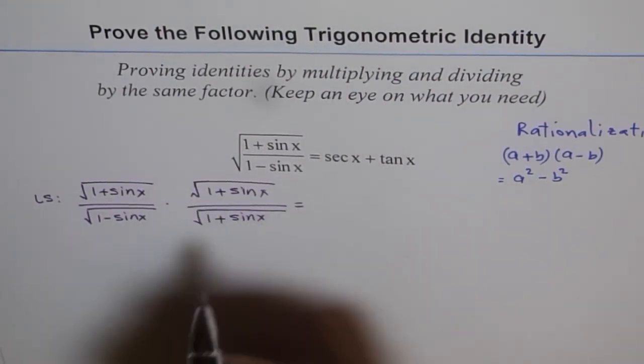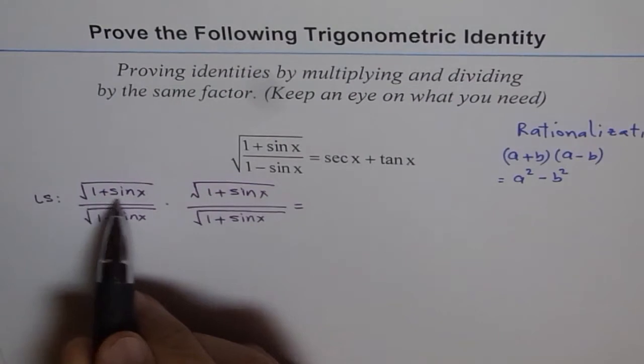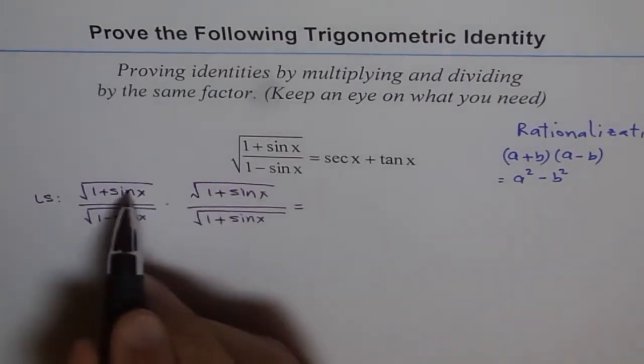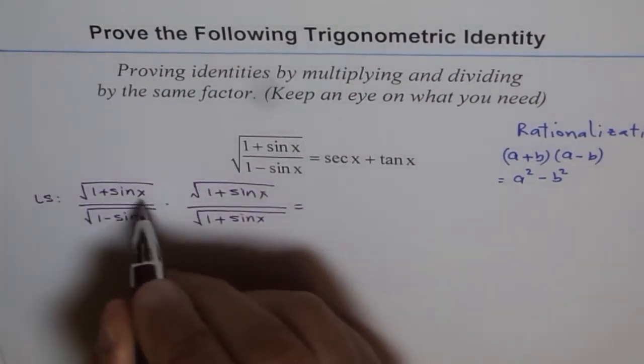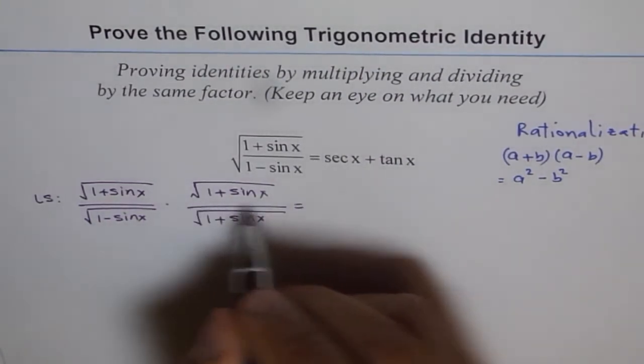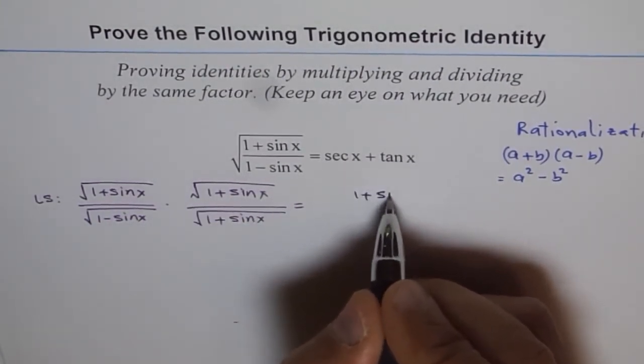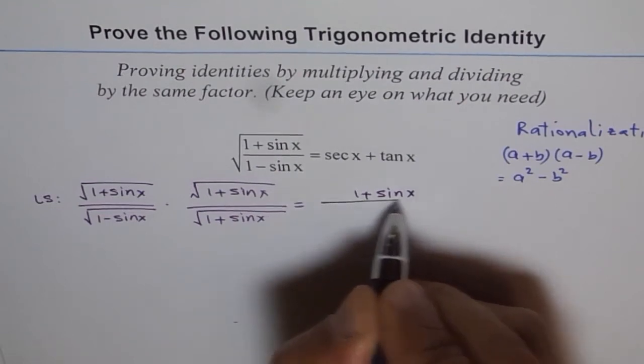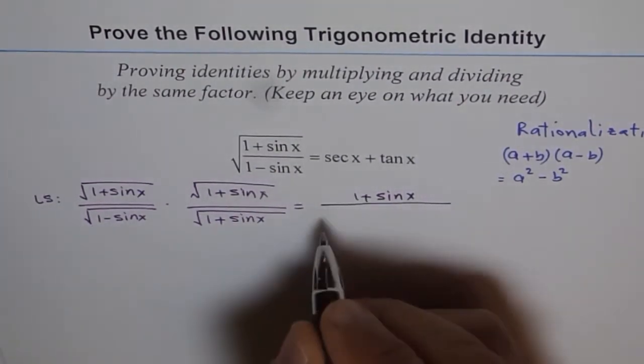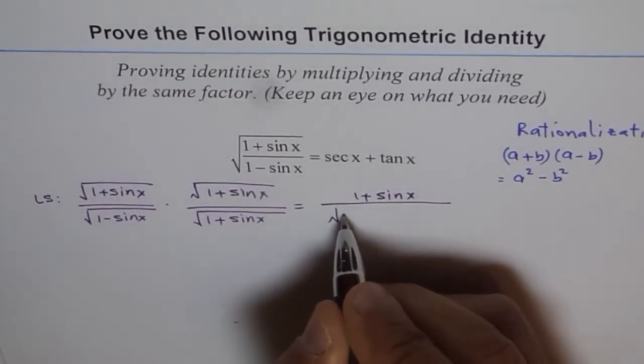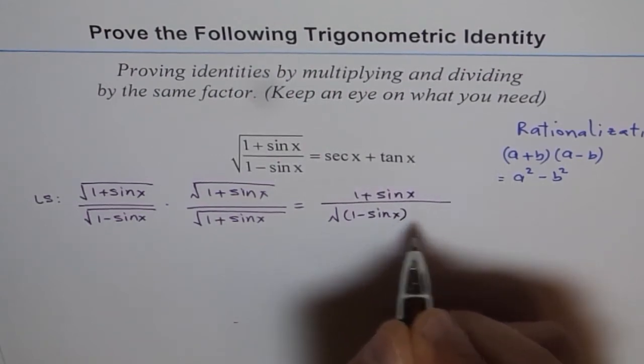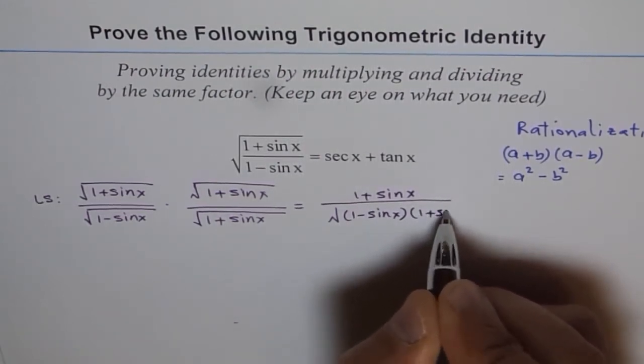If we do so, in the numerator we get 1 plus sin x, because square of square root is whatever inside. We get 1 plus sin x in the numerator divided by, here we get within the square root, 1 minus sin x times 1 plus sin x.